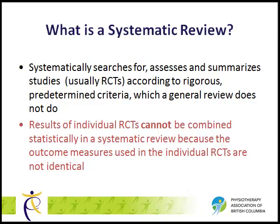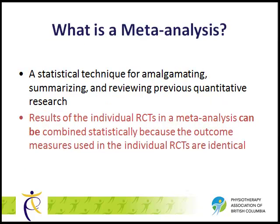Another research study with a high level of evidence is a systematic review. A systematic review methodically searches for, assesses, and summarizes studies according to predetermined criteria — most often, these studies are RCTs. However, systematic reviews can also include a meta-analysis. A meta-analysis combines the results of several studies that address a set of related research hypotheses. The difference is that a systematic review combines results of previously published articles using different outcome measures, while a meta-analysis combines statistically the results of previously published articles that use the same outcome measures.